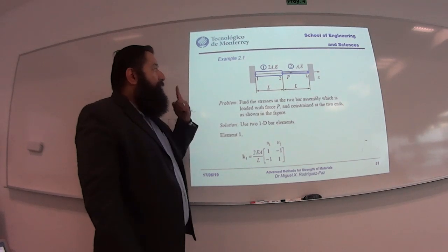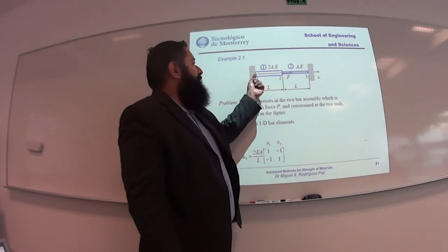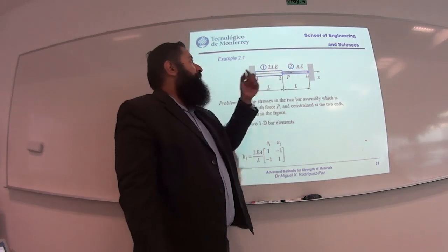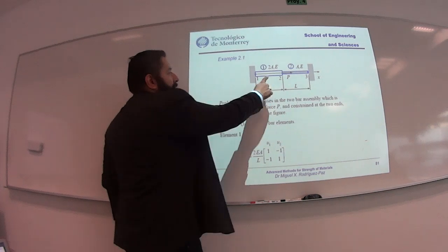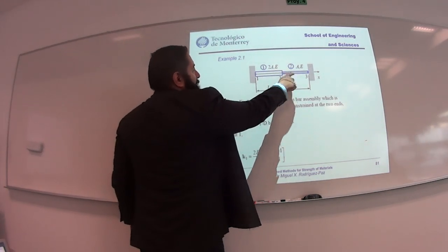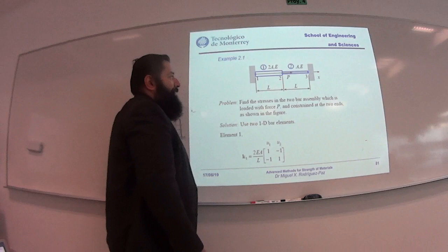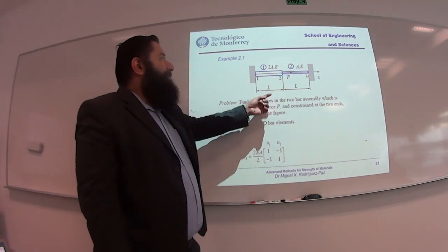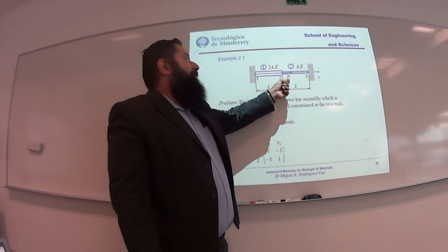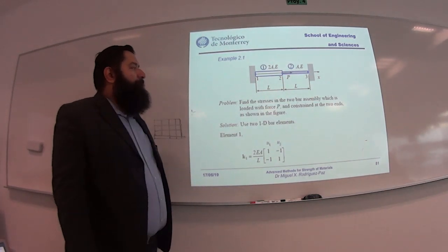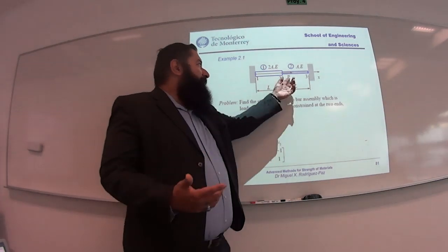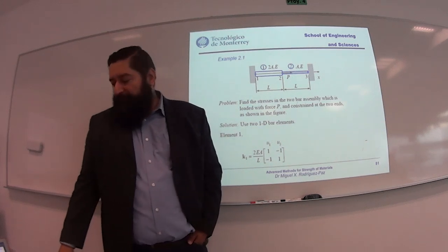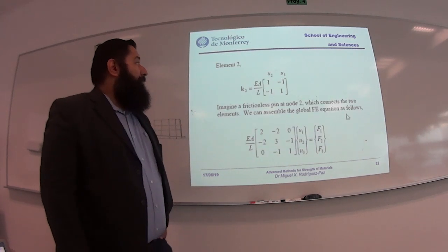We are going to use two 1D bar elements — one element from here to here, another from here to here. We have two sections: the first has an area of 2A, the second has area A. They share the same material modulus E, and there is an external force P applied in the middle at the connection node.